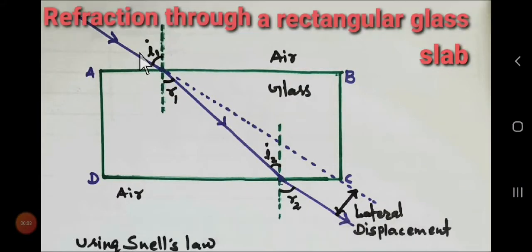Hello students, today I will discuss the topic of reflection through a rectangular glass slab. In this topic we are seeing there is a rectangular glass slab ABCD, and there is a ray which is incident at angle i1.